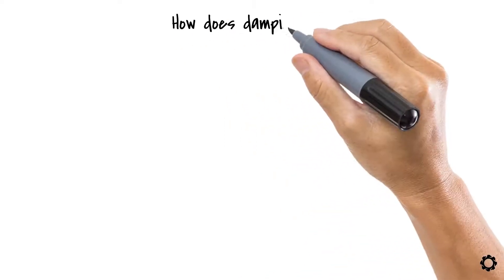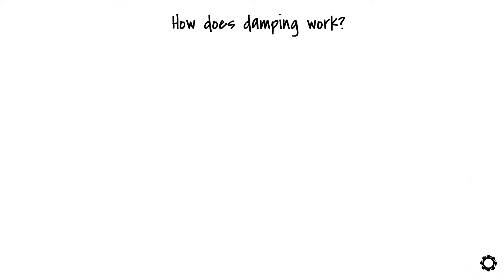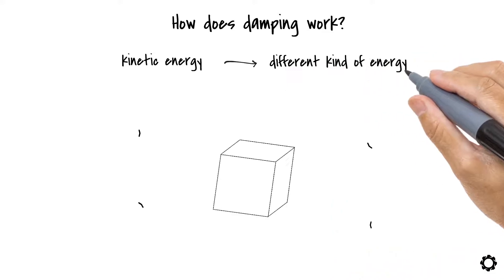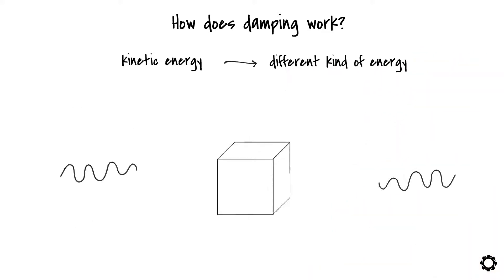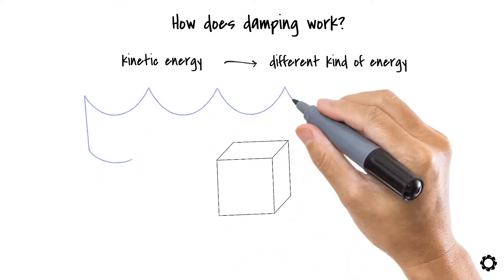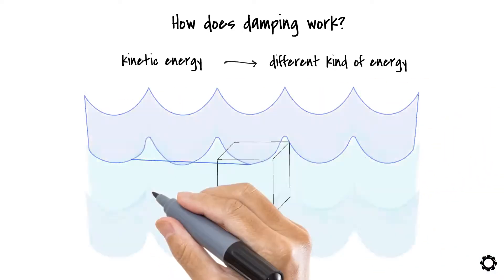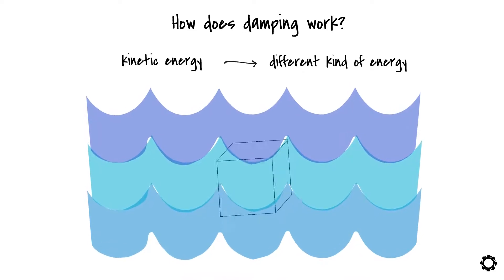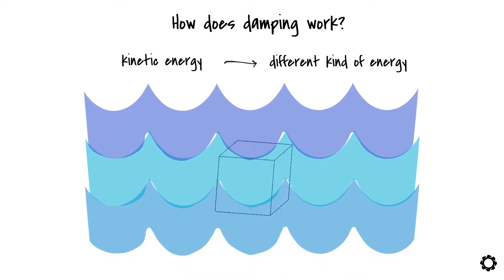But how does damping work? Well, easy. The kinetic energy of the object is transformed into different kinds of energy. Commonly, heat produced by the friction between the moving object and the medium where this object is immersed. Water, oil, etc. If we are in the presence of such media, we talk specifically about viscous damping.